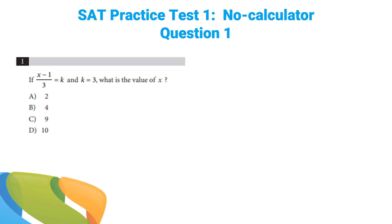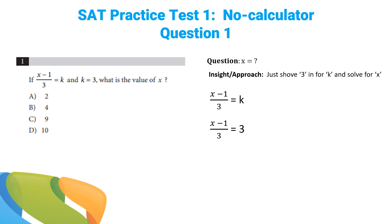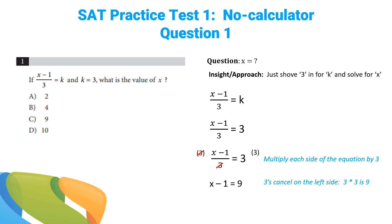Question one: if x minus 1 over 3 equals k and k equals 3, what is the value of x? It's actually pretty straightforward. We're being asked to find x. All we're going to do is shove in 3 for k and solve for x. Multiply each side of the equation by 3 — that's the fastest way to do it. The 3s on the left cancel, we're left with x minus 1 equals 9, and x equals 10. Answer choice D.